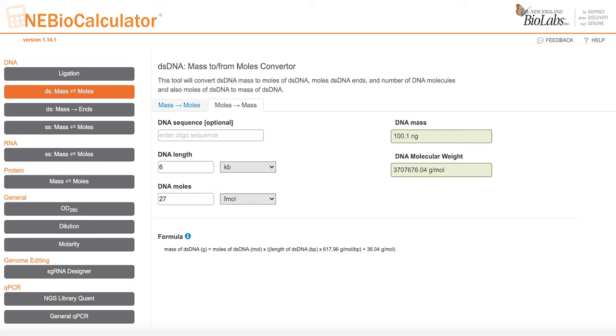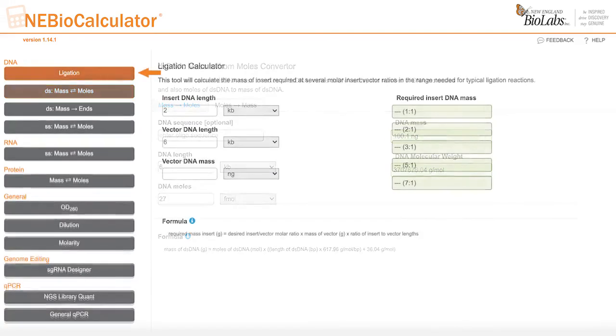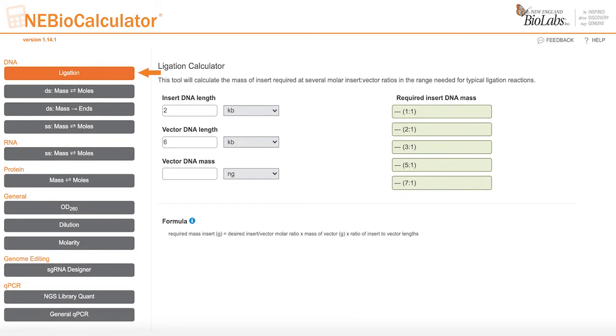Then, go back to the ligation module by clicking on the ligation box on the left. Make sure the values of insert at 2 KB and vector length at 6 KB are present. You can then input the mass of vector DNA of 100.1 nanograms, which again is equivalent to 27 femtomoles, into your reaction.